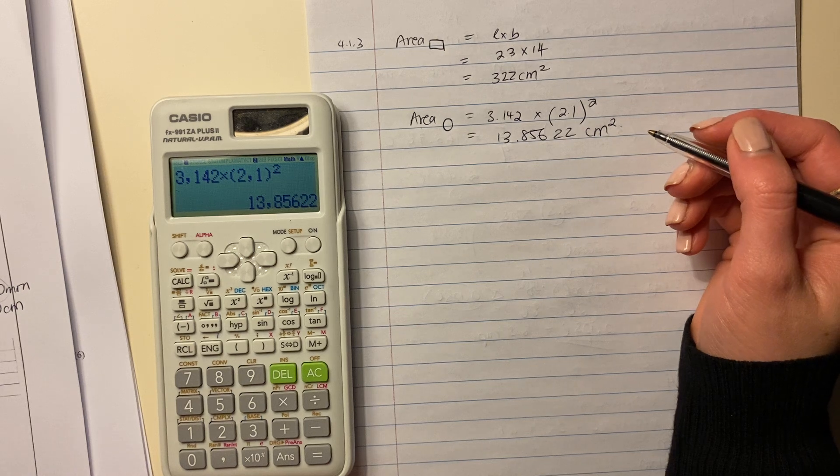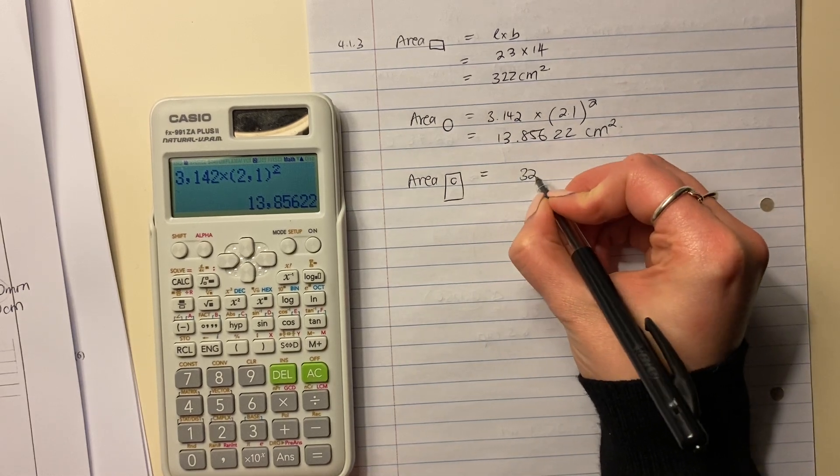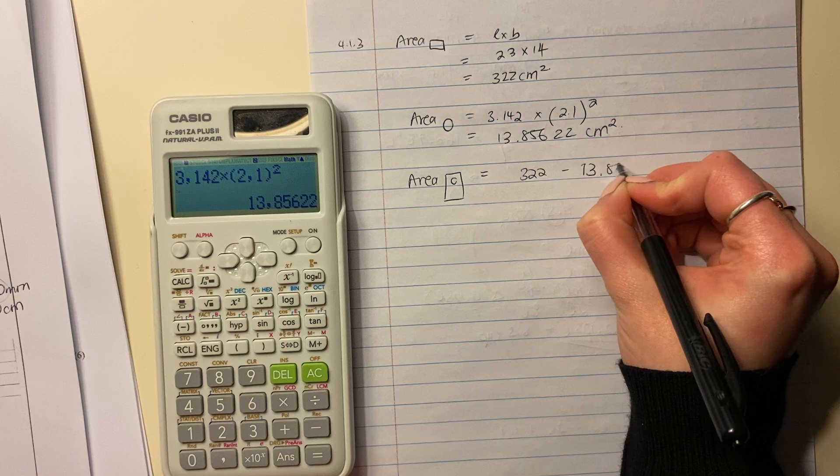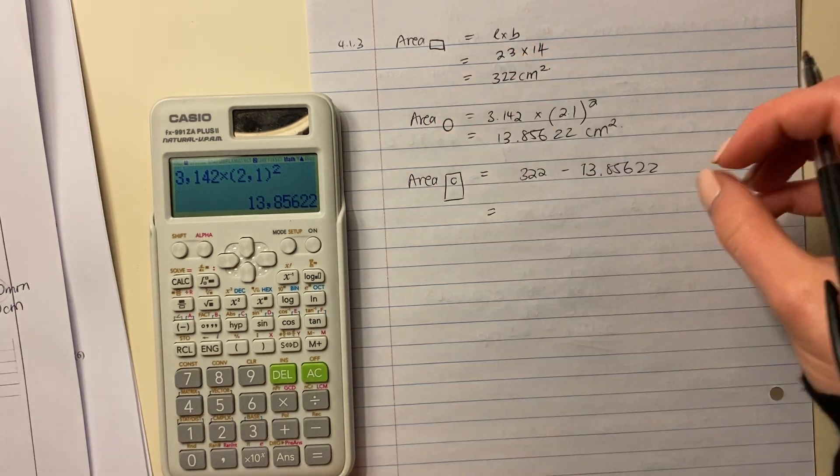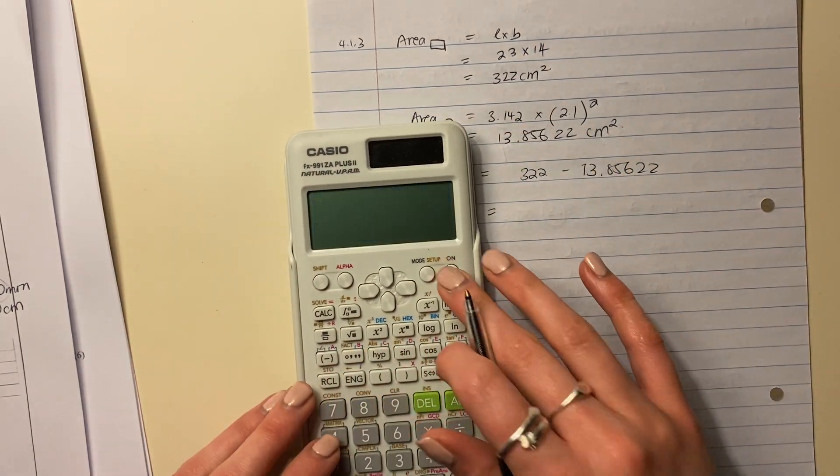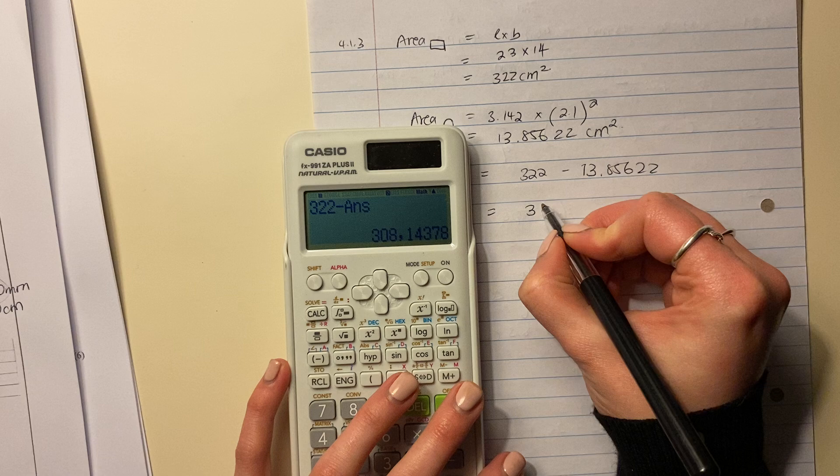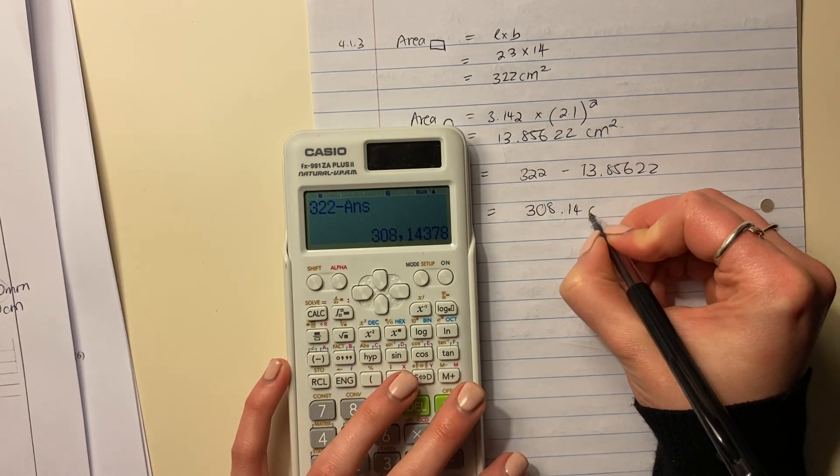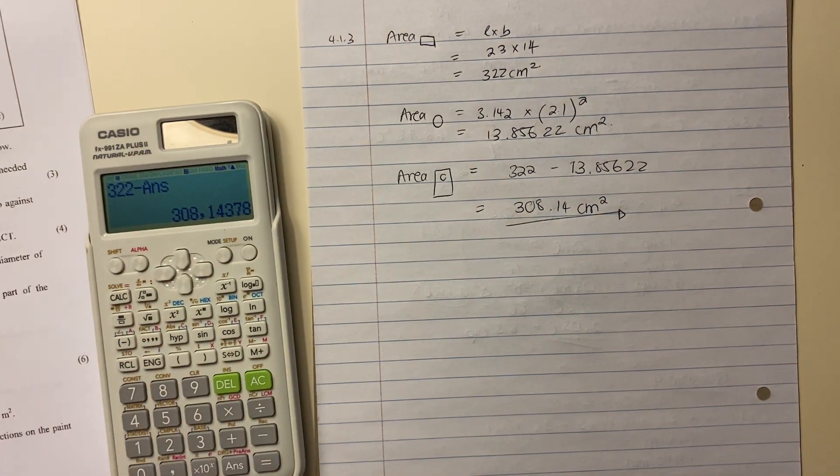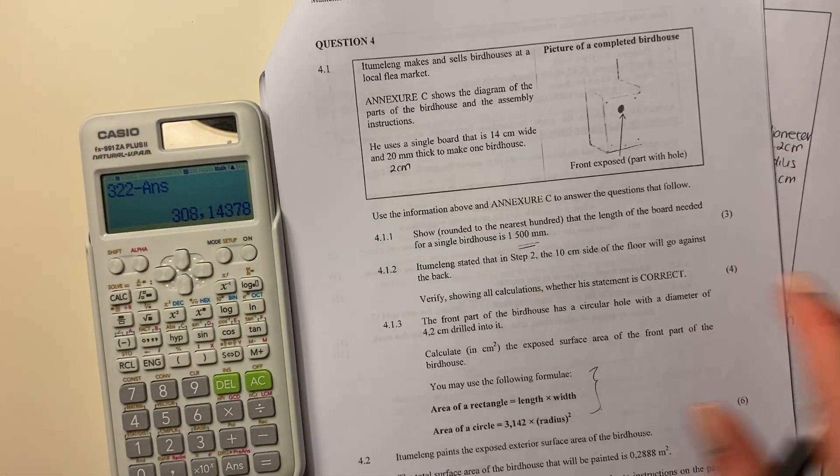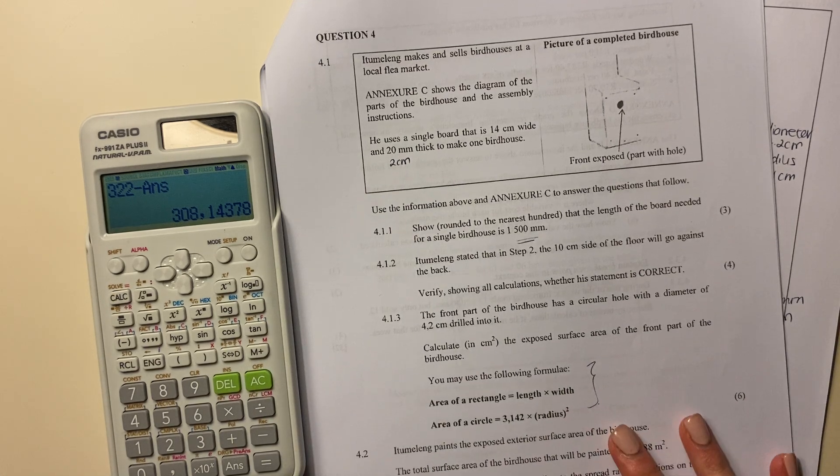Now, you could be saying, Margie, why didn't you round off? Well, we're not done. So the area of that front bit is going to be 322 minus the 13.85622, right? Because it's saying the area of that rectangle, if it didn't have a hole, subtract the area, the surface area of the hole, and let's get that right. So my answer is 308.14, round off to two decimal places, centimeters squared. Let's make sure we've answered the question properly. It says calculate this in centimeters, and we have now done that, and we have done an excellent job and are done with this question.